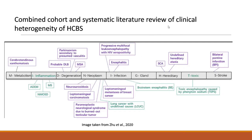Previously, the hot cross bun sign was classically considered specific for MSA cerebellar type. However, recent cohort studies and systematic literature reviews have found associations with other neurological conditions as well. These include metabolic conditions such as cerebrotendinous xanthomatosis, inflammatory conditions such as multiple sclerosis, and multiple myeloma. Most commonly it is associated with MSA. It can also be related to neoplasm as part of paraneoplastic syndrome — with case reports associated with testicular tumor, breast tumor, leptomeningeal carcinomatosis, and lung cancer.